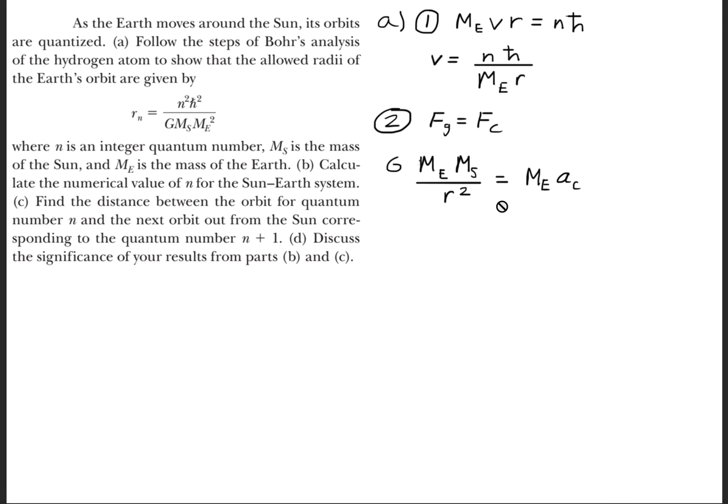We square that value, r squared, and set that equal to mass times centripetal acceleration. The mass will be the mass of the Earth. Let's expand what a_c is, the centripetal acceleration. We can rewrite that as v squared over r.